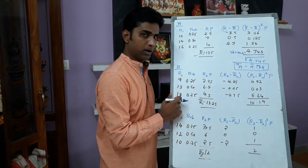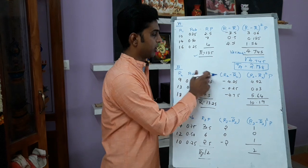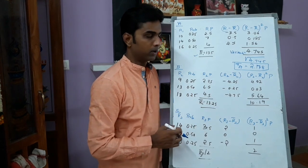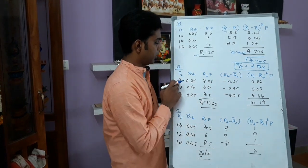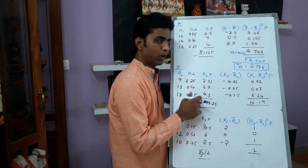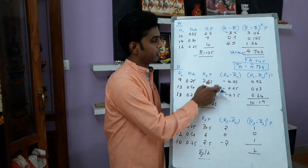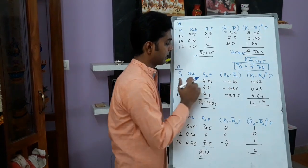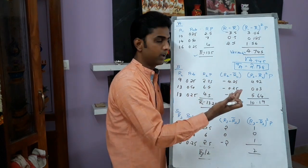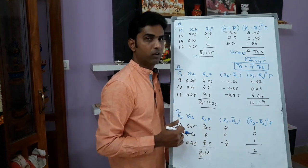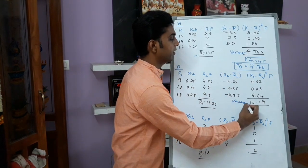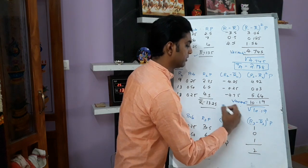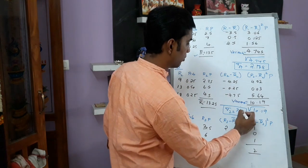For Company B: probability is given; multiply R2 into probability — 9 into 0.25. R2 bar is 13.25. Then R2 minus R2 bar: 9 minus 13.25 equals minus 4.25. You need to square this value and multiply with the respective probability. 4.25 squared into 0.25 gives you 4.52. Final variance is 10.19. Square root of variance is standard deviation. Standard deviation of second security is 3.192.